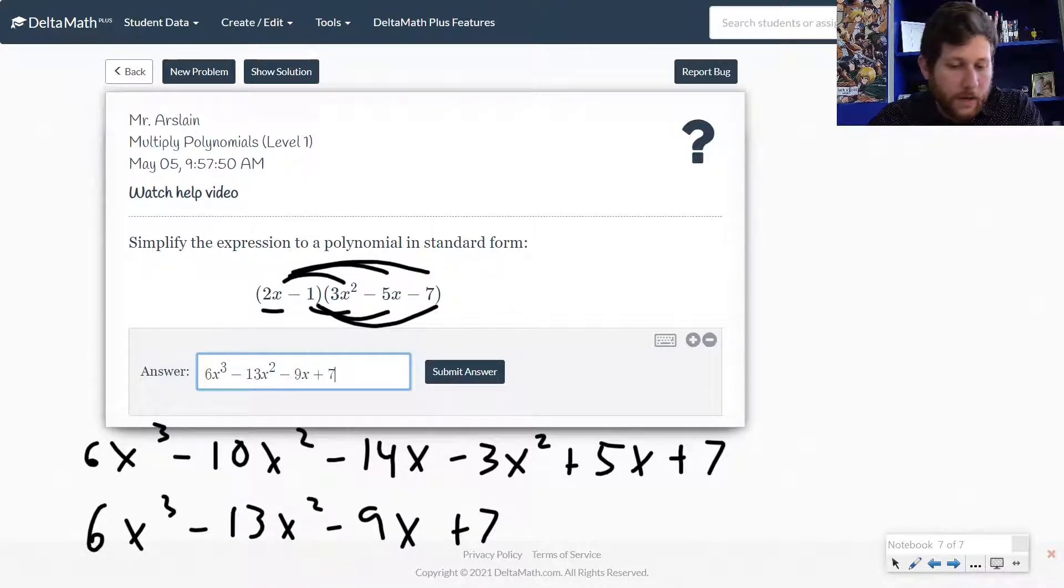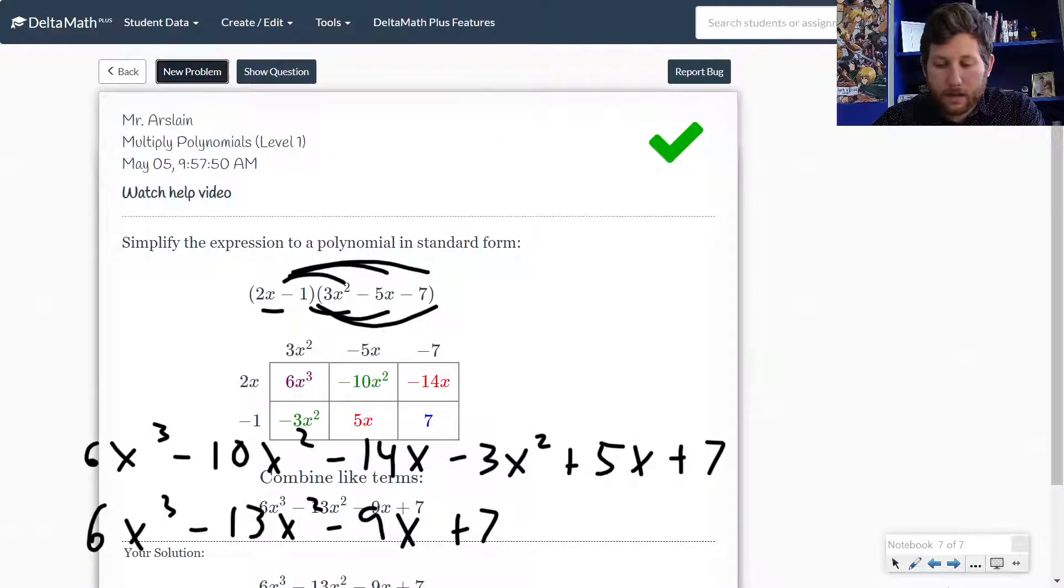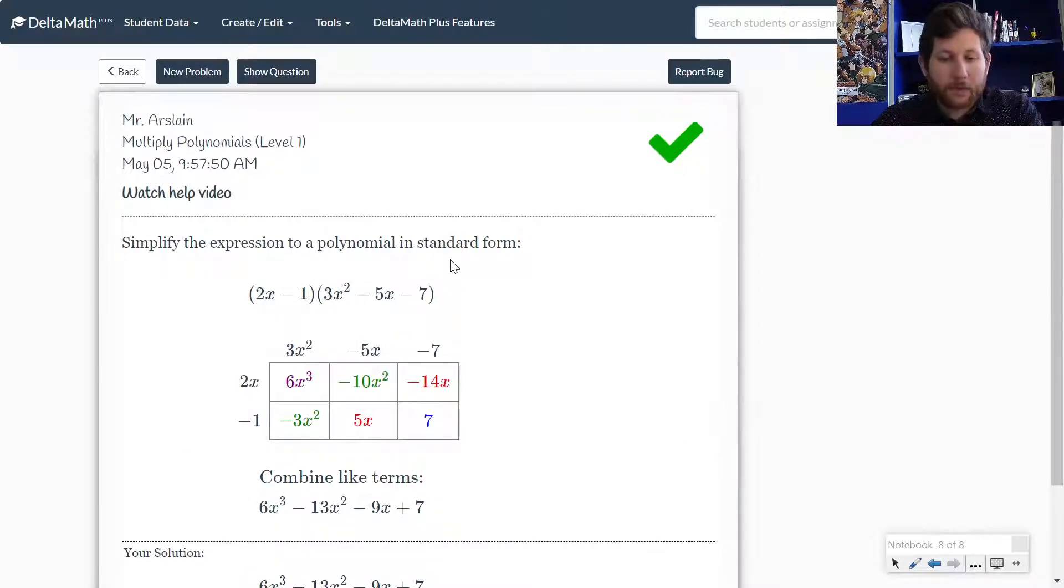All right, so that looks good. We've got a cubed, a squared, x, 7. That all looks good. Let's go ahead and submit that and take a look. And yeah, there we go.